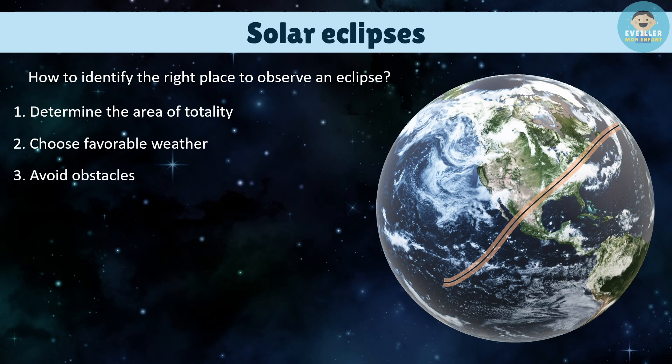Avoiding obstacles: make sure the horizon is clear in the chosen location. Avoid areas surrounded by buildings, trees, or mountains that could obstruct the view of the Sun. Find an accessible site: choose a viewing site that is easily accessible by car or public transportation, especially if you want to view the eclipse in the area of totality. Allow enough time to get there and find a suitable location.